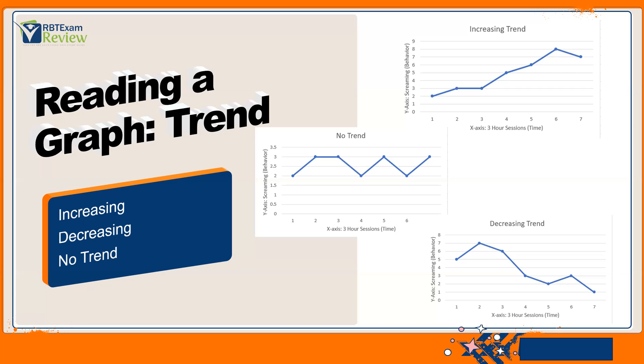Is it increasing, is it decreasing, or is there no trend? So if you look at the top graph, you see it's clearly an increasing trend. We start down here at two. It kind of moves up to three, stays flat, jumps up to five, jumps up to six, jumps to eight, and then a slight decrease at seven. But overall, and that's what we're looking at, the overall picture, what has the data done? What is the trend? We are looking at an increasing trend in this behavior.